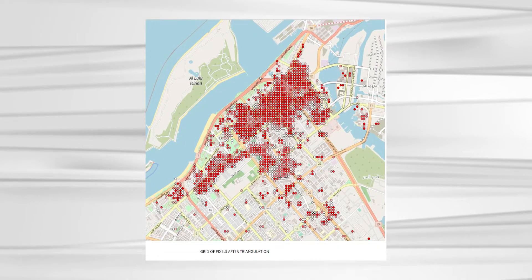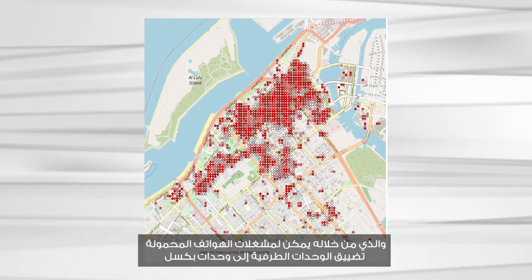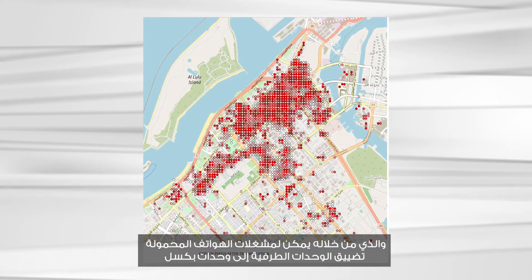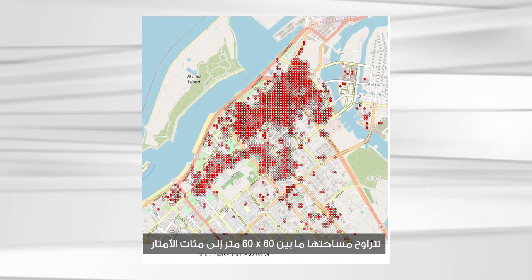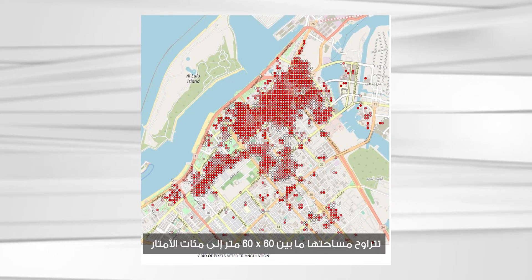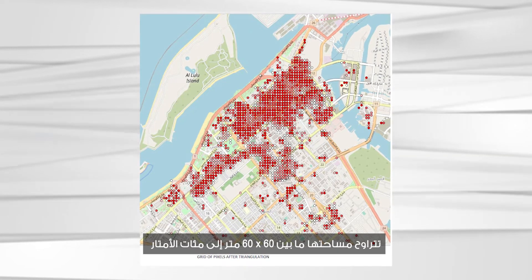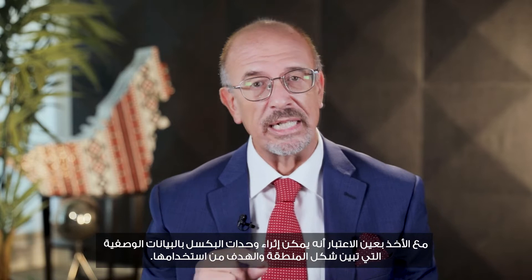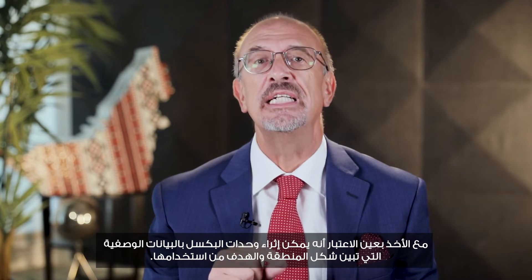To facilitate the processing of network activity records, the International Telecommunication Union has standardized the definition of location grids. On these grids, operators can narrow down the location of a terminal to square pixels whose size can go from 60 by 60 meters to hundreds of meters. Taking into account publicly available descriptions from Google and other sources, these pixels can be enriched with metadata expressing the type of area and its intended use.